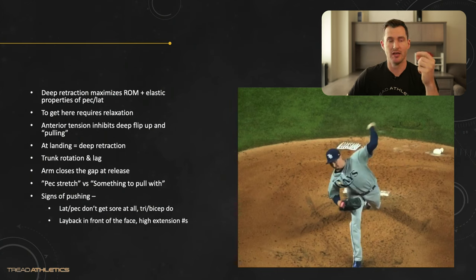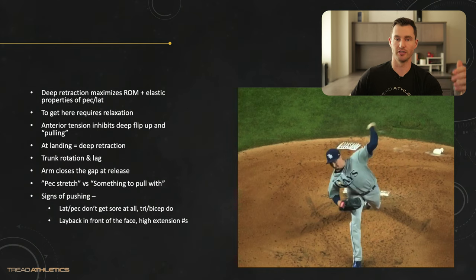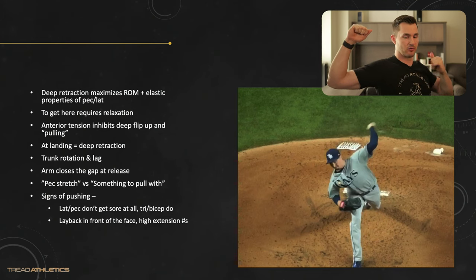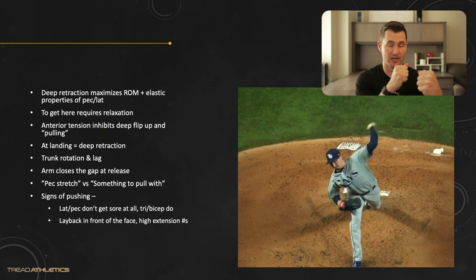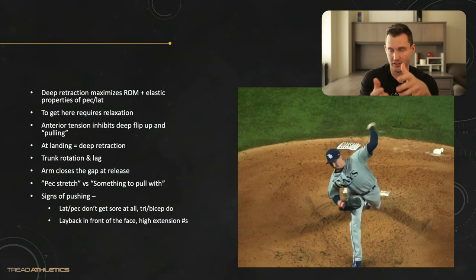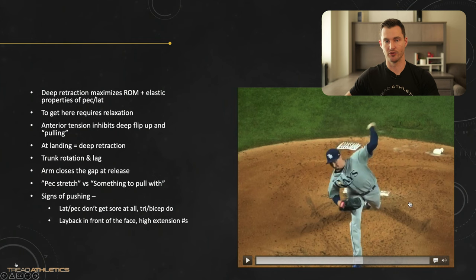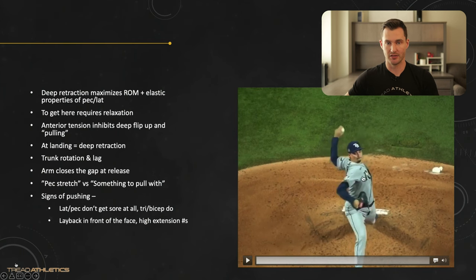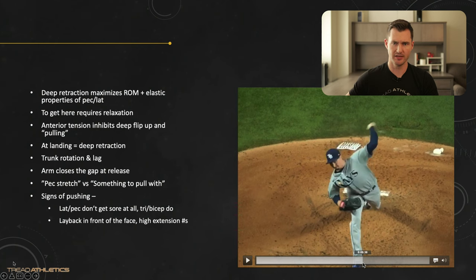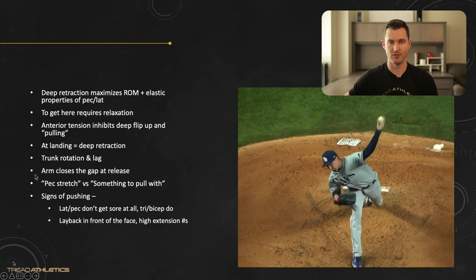It's not a super aggressive stretching sensation — it's more like feeling like you relax and float into a deep position and that you have something to pull with into ball release. There's a ton of pec involvement and a ton of lat involvement from the side. If you feel like you're pushing or can't feel that pulling feeling, two clues: one, if your lat and pec don't get sore at all but you are getting sore in your tricep or bicep, that's a sign the arm is creeping out in front of the trunk rotation.